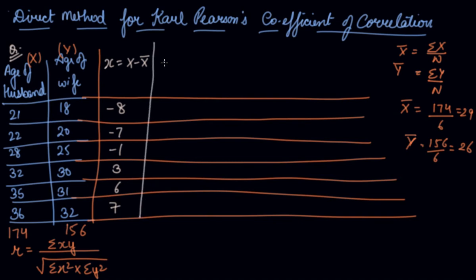Now we can find out small y by y series minus the mean of y series. So the mean of y series is 26, and the deviations are 18 minus 26 is minus 8, minus 6, minus 1, 4, 5, and 6.